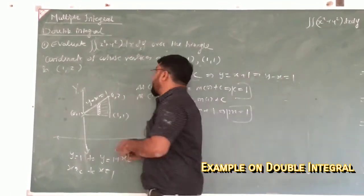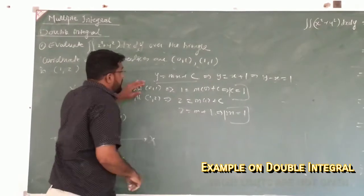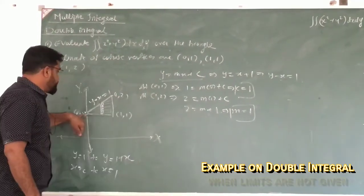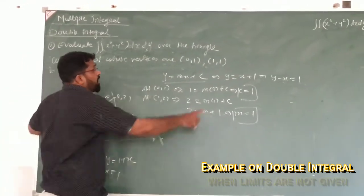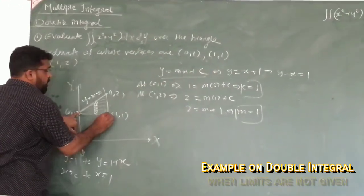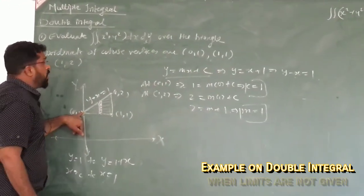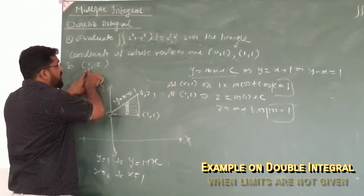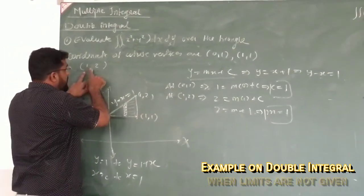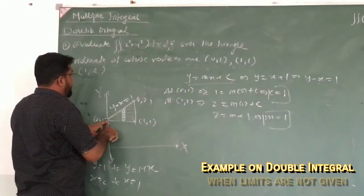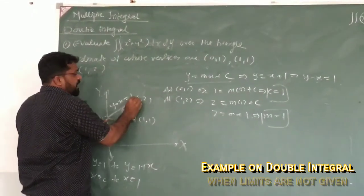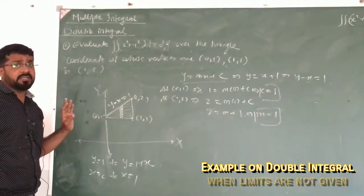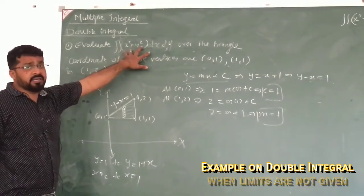First of all, we will form a triangle. The vertex (0,1) is on the y-axis. The vertex (1,1) is up, and (1,2) has x equal to 1 and y equal to 2 on the y-axis. Now we will connect these three points to get the required triangle over which we have to integrate this region.